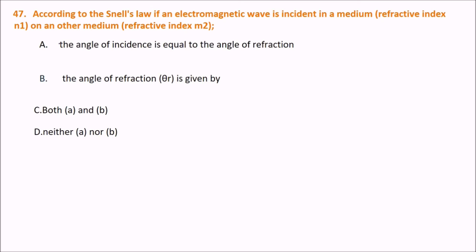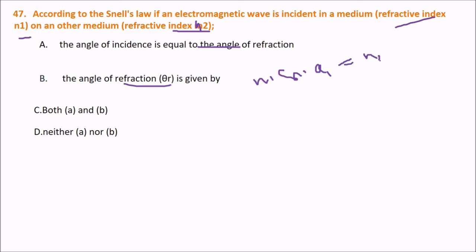According to Snell's law, if an electromagnetic wave is incident in a medium with refractive index n₁ on another medium with refractive index n₂, the relationship is n₁ sin θ₁ = n₂ sin θ₂. Both the statement that the angle of incidence relates to the angle of refraction and the formula are correct — the answer is both A and B.